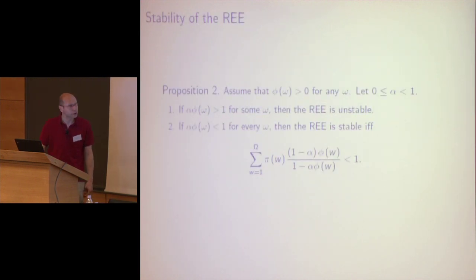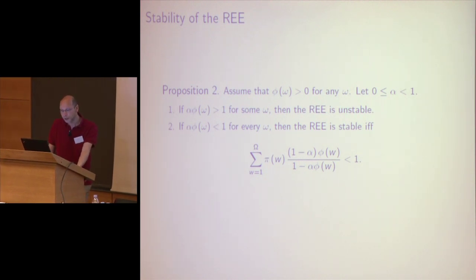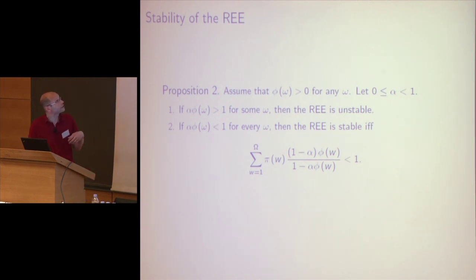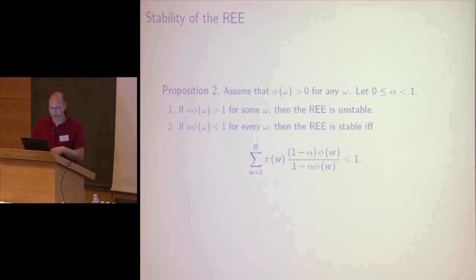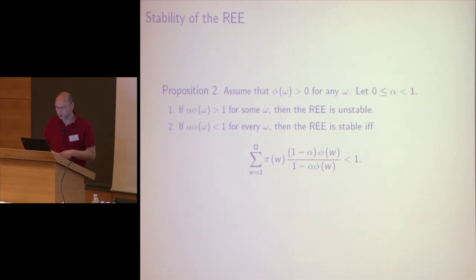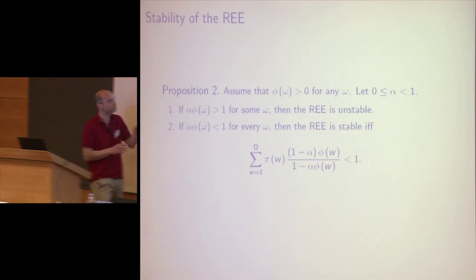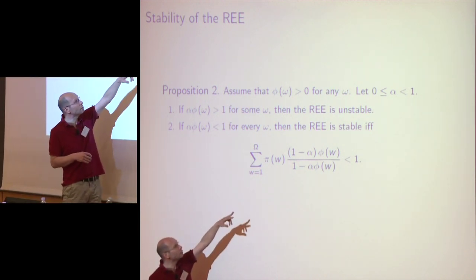The result we have is a necessary and sufficient condition for this to obtain — that is, for the temporary equilibrium relation to be contracting. The statement is as follows. If there exists some state ω such that αφ(ω) is greater than one, then the equilibrium is unstable: if there is even one state where αφ > 1, then in every state you cannot have a unique rationalizable outcome. Conversely, if αφ(ω) < 1 in every state, then the stability condition — which is both necessary and sufficient — requires that a certain weighted sum be less than one.